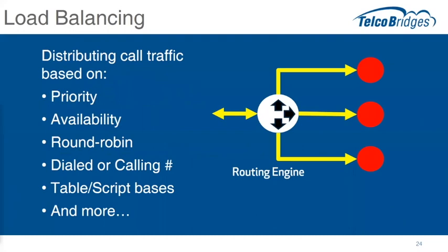Zeroing in on the routing engine — virtually every SBC has one built in. As a session border controller processes its information, it's going to send calls off to one or more destinations. It uses a handful of things to make decisions, including simple options like priority or round robin, where calls are all treated the same and handed off evenly.